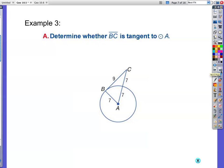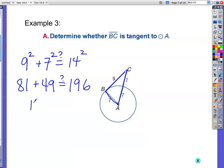Now, how does that apply to us and our problems? Right here. They want us to determine whether BC is tangent to circle A. Well, in order for it to be tangent, it's going to have to form a right angle right here between the radius and the tangent line. And how will I know if it's a right angle? If I have a right triangle. And how do I know if I have a right triangle? I use Pythagorean theorem. So 9 squared plus 7 squared, does that actually equal the hypotenuse, which is 14 squared?